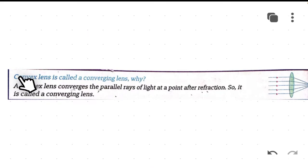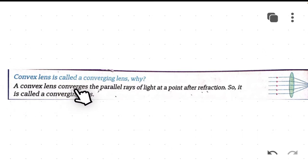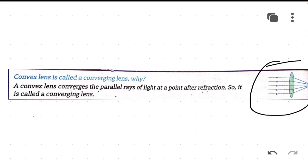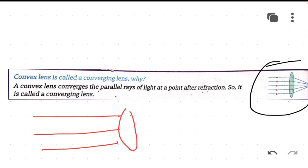Our first question is: a convex lens is called a converging lens — why? The answer is that a convex lens converges the parallel rays of light at a point after refraction, so it is called a converging lens. Here you can see the example — when parallel rays of light come in, the convex lens converges all these parallel rays at a single point.